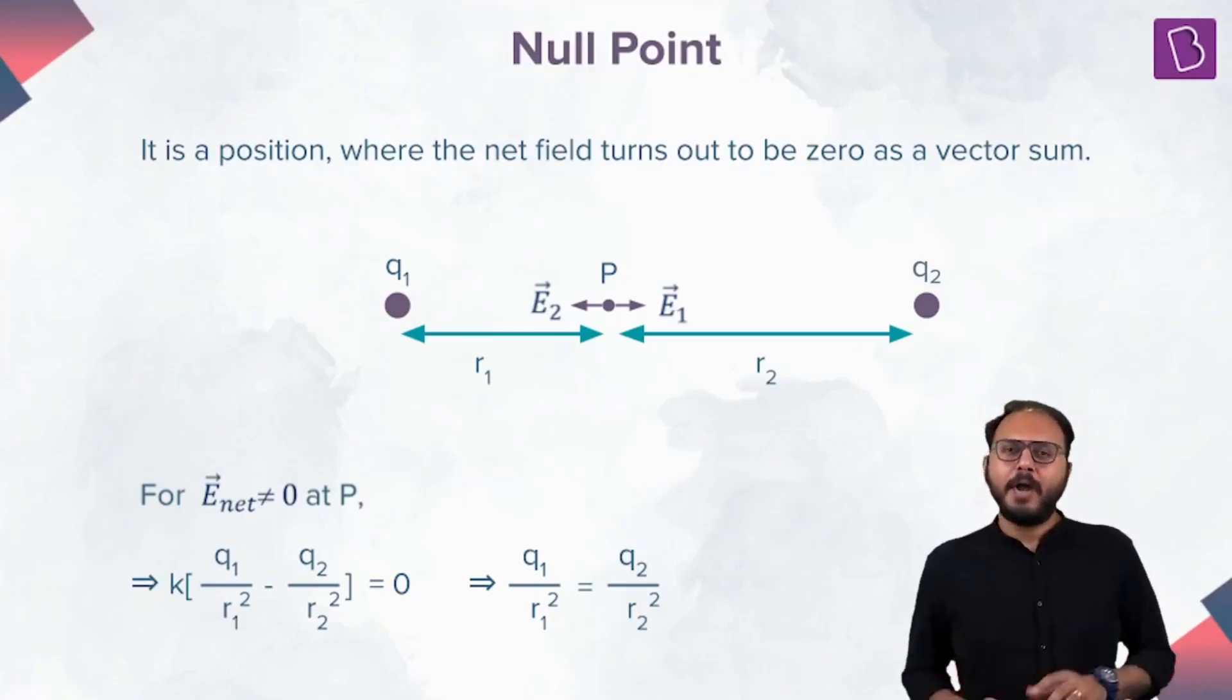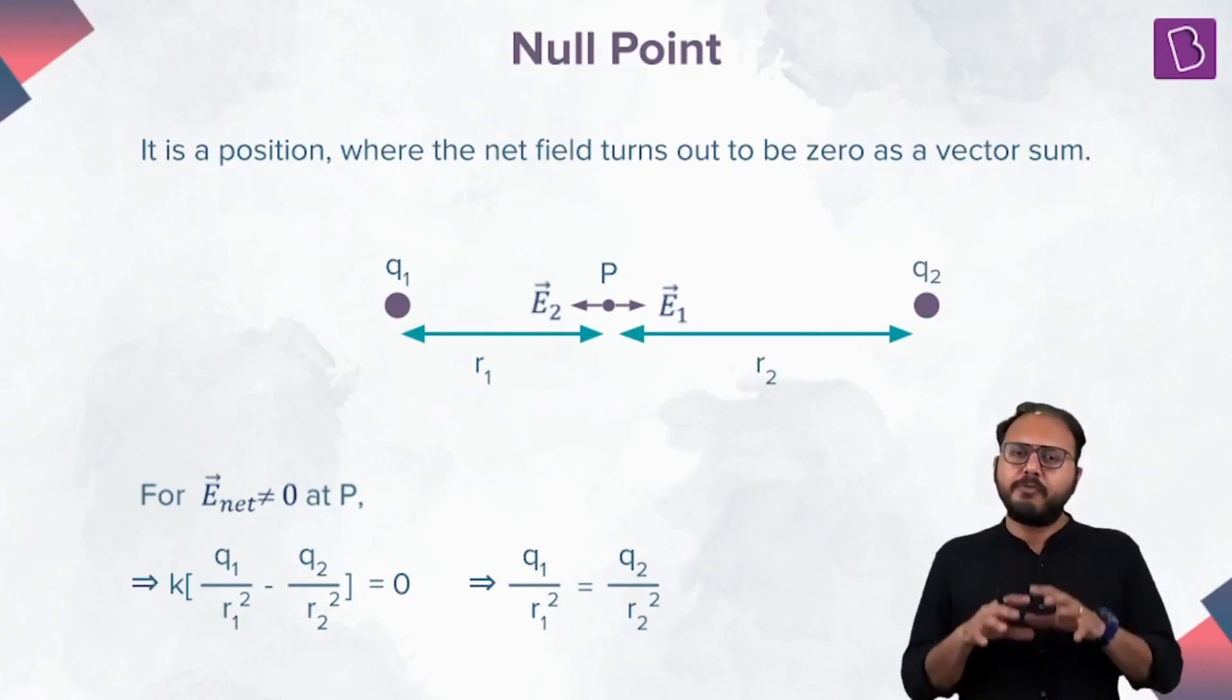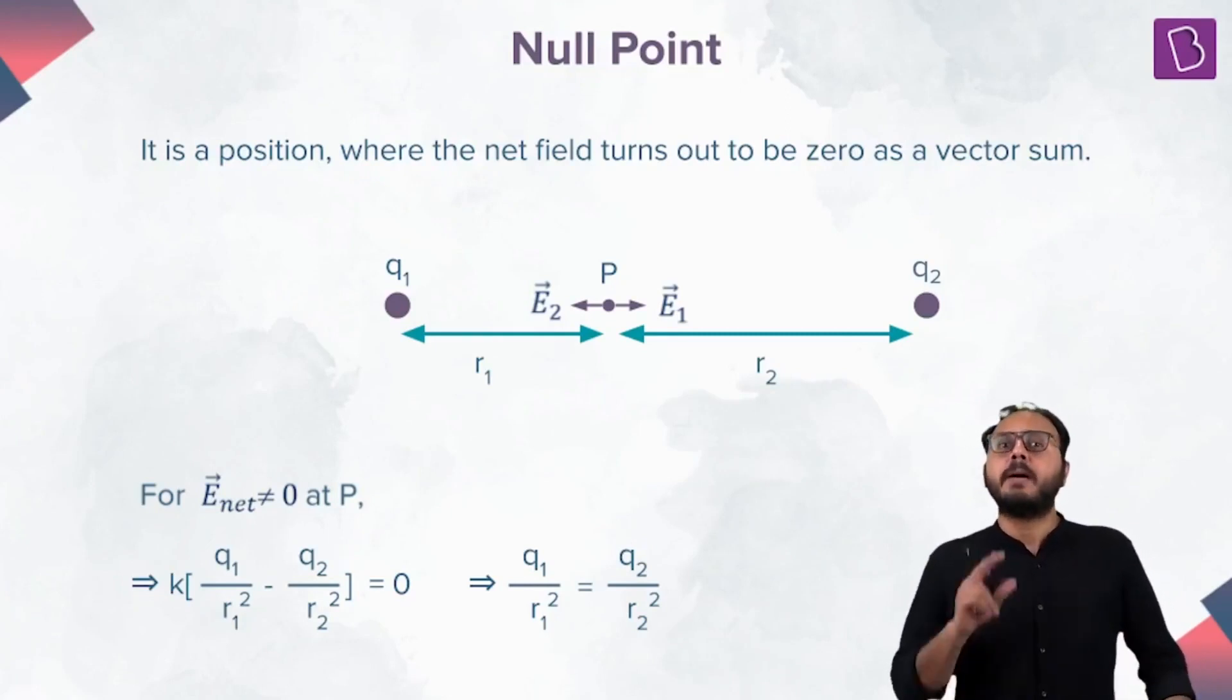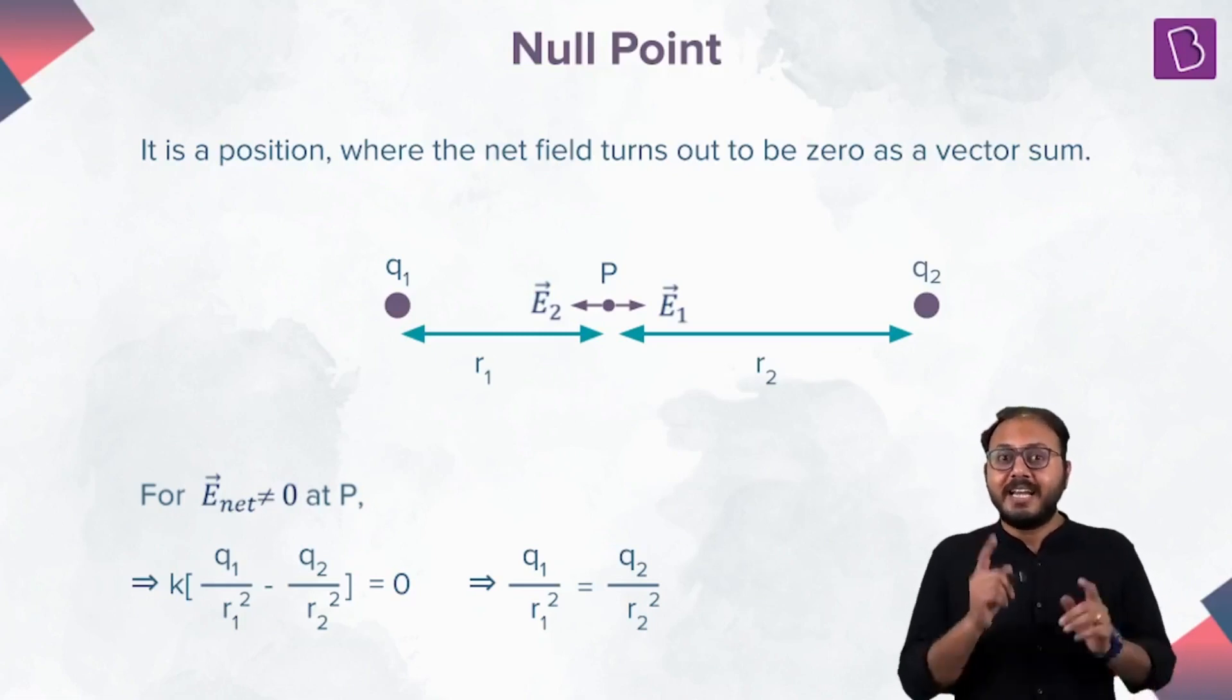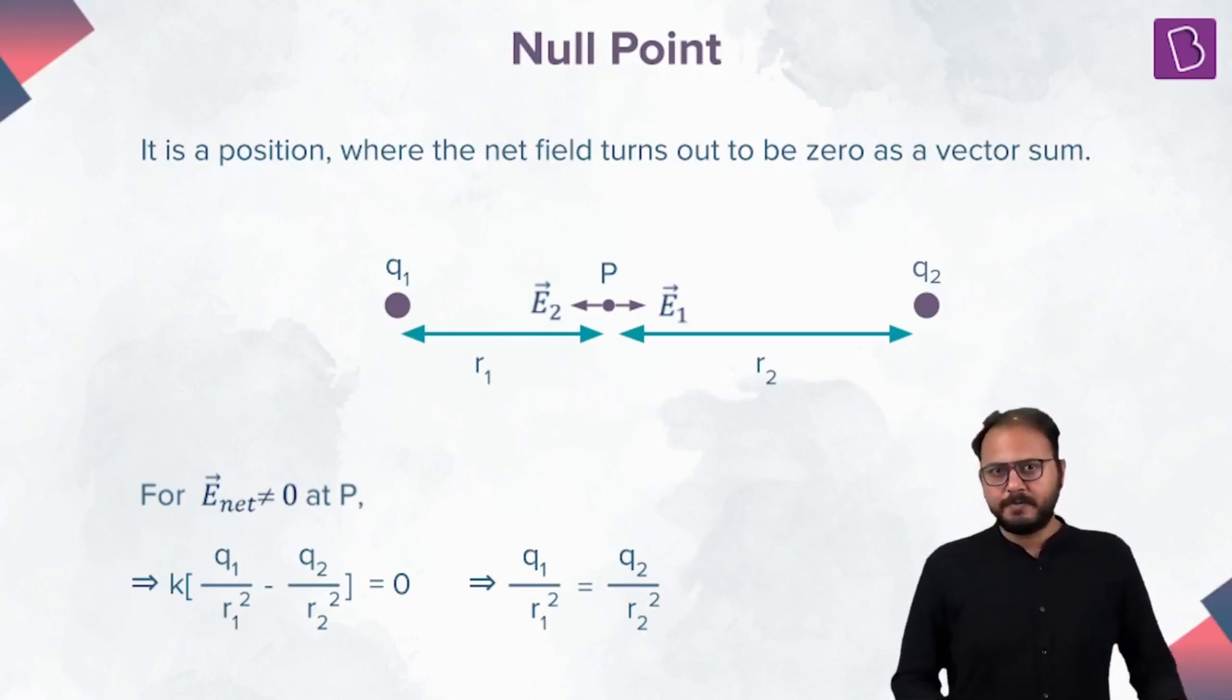Null point: the point at which equilibrium is observed, where the net force is becoming zero. The point at which the net field is becoming zero is called the null point.